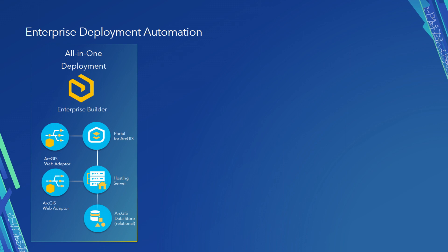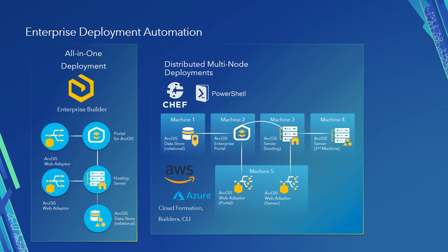When we talk about extending and automating the enterprise, I want to go through a few scenarios. We'll start off with deployment automation. If you're building out your GIS infrastructure, the first option is to build it all in one system using Enterprise Builder. New to that is a command line interface, so you can script the entire system on one machine. For multi-node deployments, on-premises or in the cloud, you can use Chef or PowerShell DSC, or Enterprise Builder for the cloud — Cloud Builder, CloudFormation templates, or the CLI versions of these.